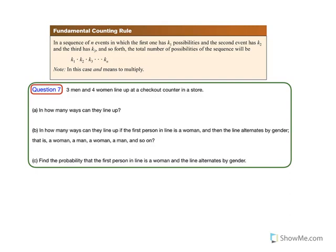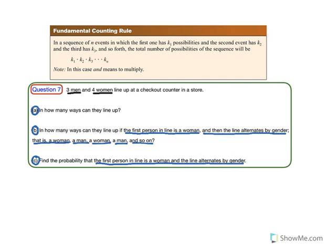In this question, we are given that three men and four women line up at a checkout counter in a store. We have three sub-questions: (a) in how many ways can they line up, (b) in how many ways can they line up if the first person is a woman and the line alternates by gender — woman, man, woman, man — and (c) find the probability that the first person is a woman and the line alternates by gender. These three questions are related, so let's answer part (a) first.